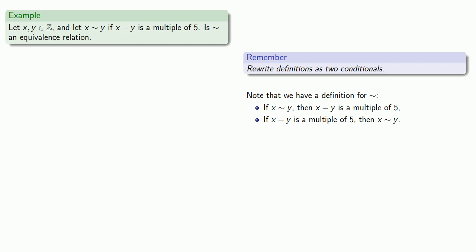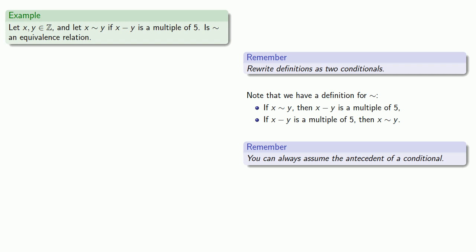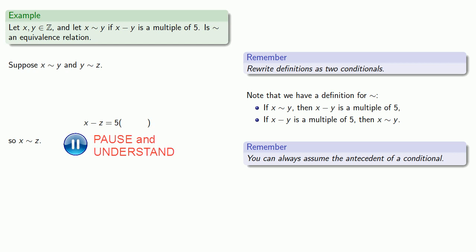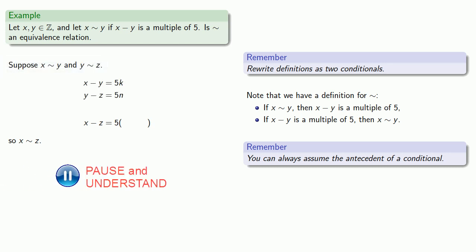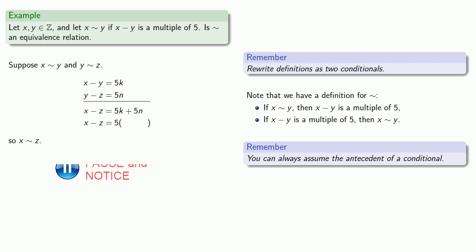Our last requirement is transitivity. Suppose x squiggle y and y squiggle z — we want to conclude x squiggle z. We can conclude x squiggle z if x minus z is 5 times something. Since x squiggle y and y squiggle z, we know x minus y is 5 times something and y minus z is 5 times something. Adding the two equations gives us x minus z equals 5 times something, so x squiggle z.